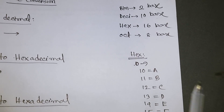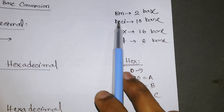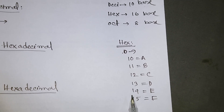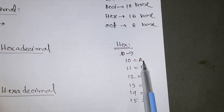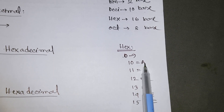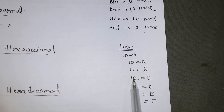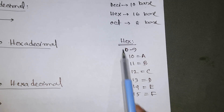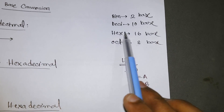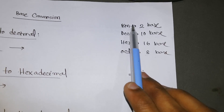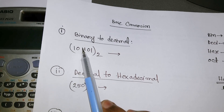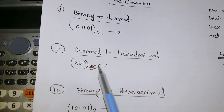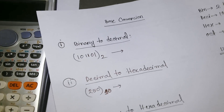In hexadecimal, 0 to 9 are the same as in decimal, but 10, 11, 12, 13, 14, and 15 are also represented as letters: 10 equals A, 11 equals B, 12 equals C, 13 equals D, 14 equals E, and 15 equals F. That gives 16 values total — that's why it's called a base-16 number system. Binary has only 0 and 1, making its base 2.